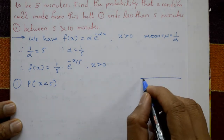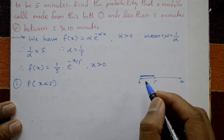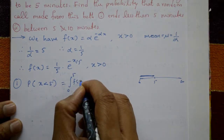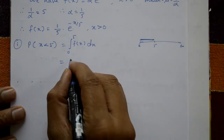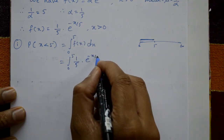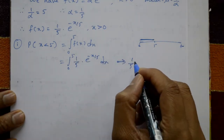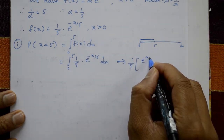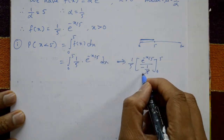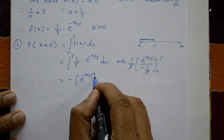P(X < 5) integrates from 0 to 5. We need to calculate this part: the integral from 0 to 5 of f(x) dx, which equals the integral from 0 to 5 of (1/5) · e^(−x/5) dx. Taking 1/5 outside as a constant and integrating, we get e^(−x/5) divided by (−1/5), evaluated from 0 to 5. The 5's cancel, leaving minus e^(−x/5) from 0 to 5.